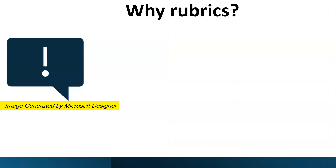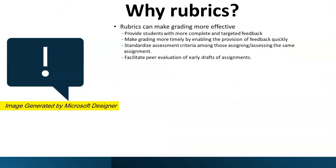Why do we need rubrics? Rubrics can make grading more effective by: 1. Providing students with more complete and targeted feedback. 2. Making grading more timely by enabling the provision of feedback soon after an assignment is submitted. 3. Standardizing assessment criteria among those assessing the same assignment. 4. Facilitating peer evaluation of early drafts of assignments.